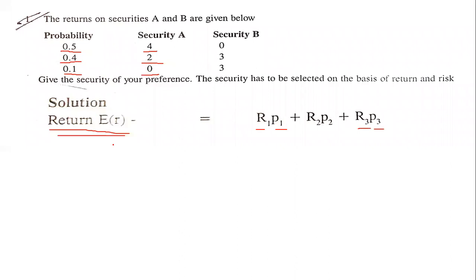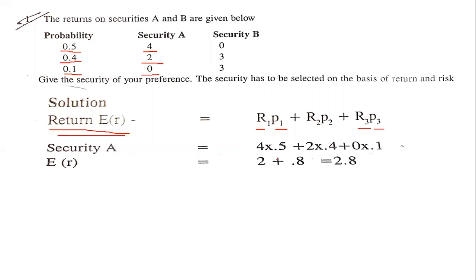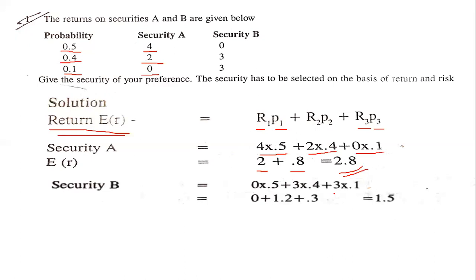Putting the values into the formula for Security A: 4 × 0.5, plus 2 × 0.4, plus 0 × 0.1. Calculating: 4 × 0.5 = 2.0, 2 × 0.4 = 0.8, and 0 × 0.1 = 0. So the expected return for Security A is 2.8.